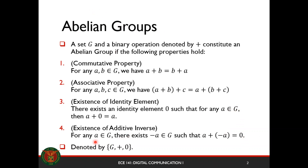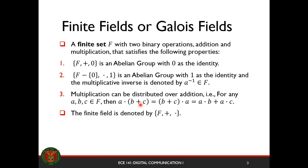Your abelian group is denoted by this expression. Now, the formal definition of finite fields or Galois fields: a finite set F with two binary operations, addition and multiplication, that satisfies the following properties. The operation F plus zero is an abelian group with zero as the identity. The set F minus zero with the multiplication operation and identity one is also an abelian group, and the multiplicative inverse is denoted by a to the minus one, which is also an element of F. If multiplication can be distributed over addition for any three elements of F, then we have commutativity and distribution over the sum of all elements inside the parentheses.